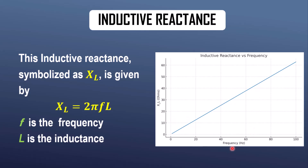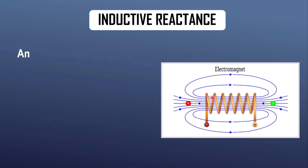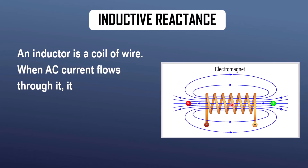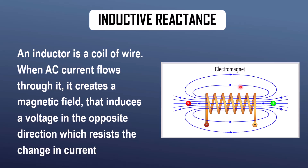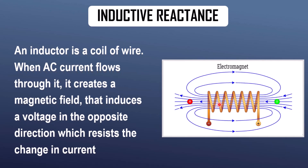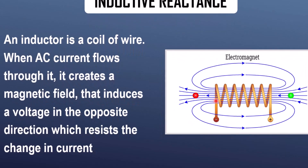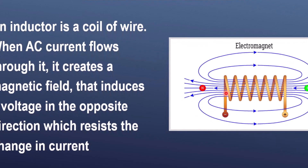At higher frequency, the inductor offers more opposition to the flow of electric current. An inductor is basically a coil of wire. Whenever AC current flows through this inductor, it generates a magnetic field around it. This changing magnetic field induces a voltage in the coil which opposes the flow of current through it. This is how an inductor offers reactance — the opposition to the flow of AC current — and this is called inductive reactance.